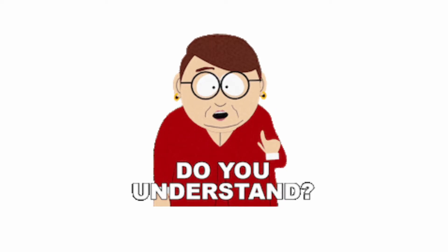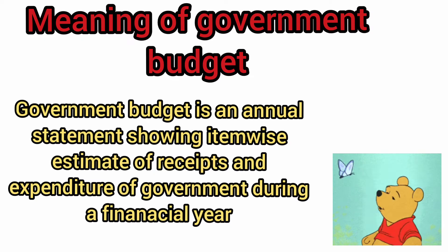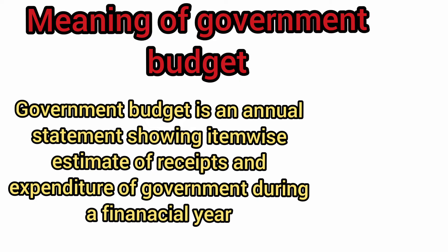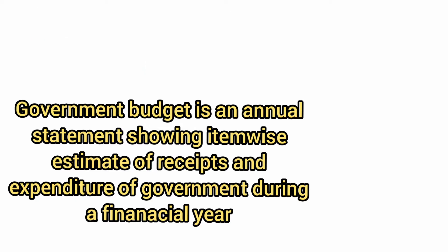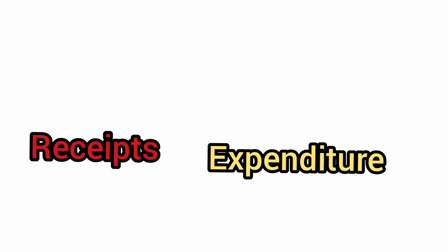So now we shall look into the meaning of Government Budget. Government Budget is an annual statement showing item-wise estimates of receipts and expenditure during a financial year. It tells how much the government has spent on different sectors. This statement giving an estimate of the receipts and expenditure of the government during a financial year is called the Government Budget.